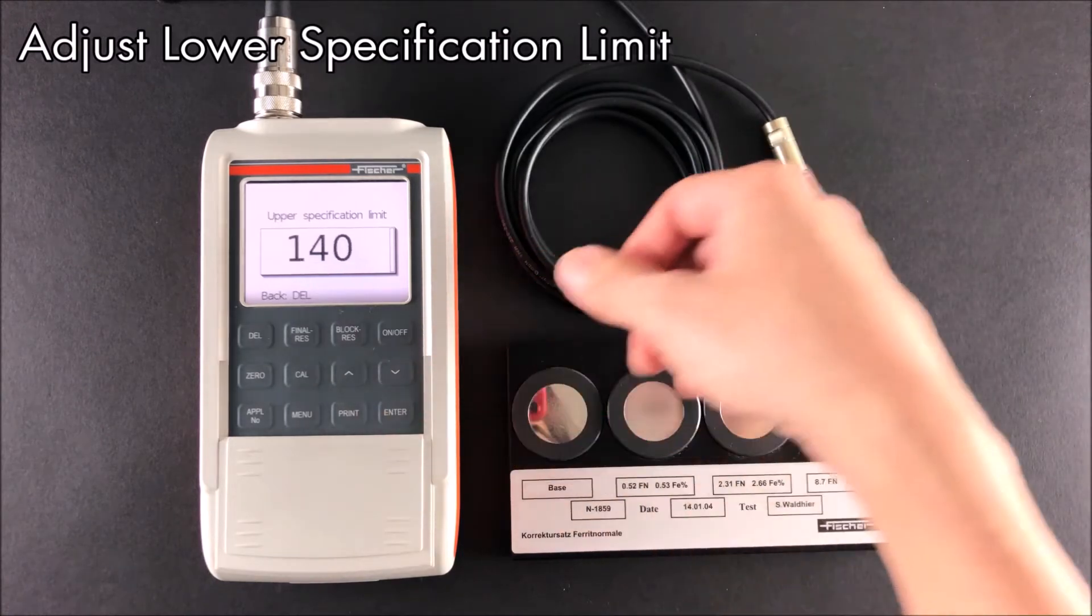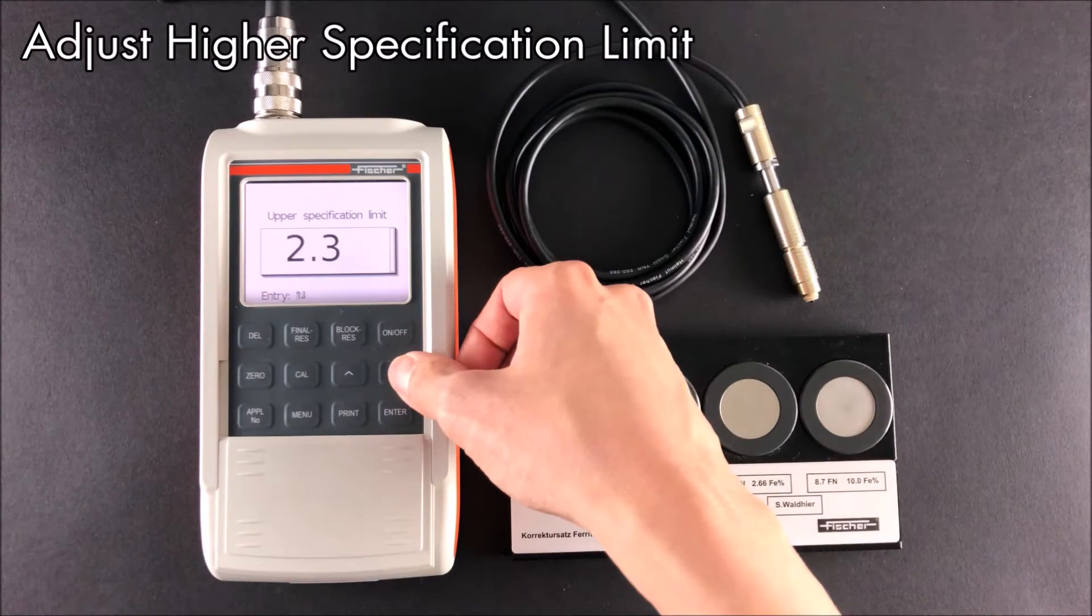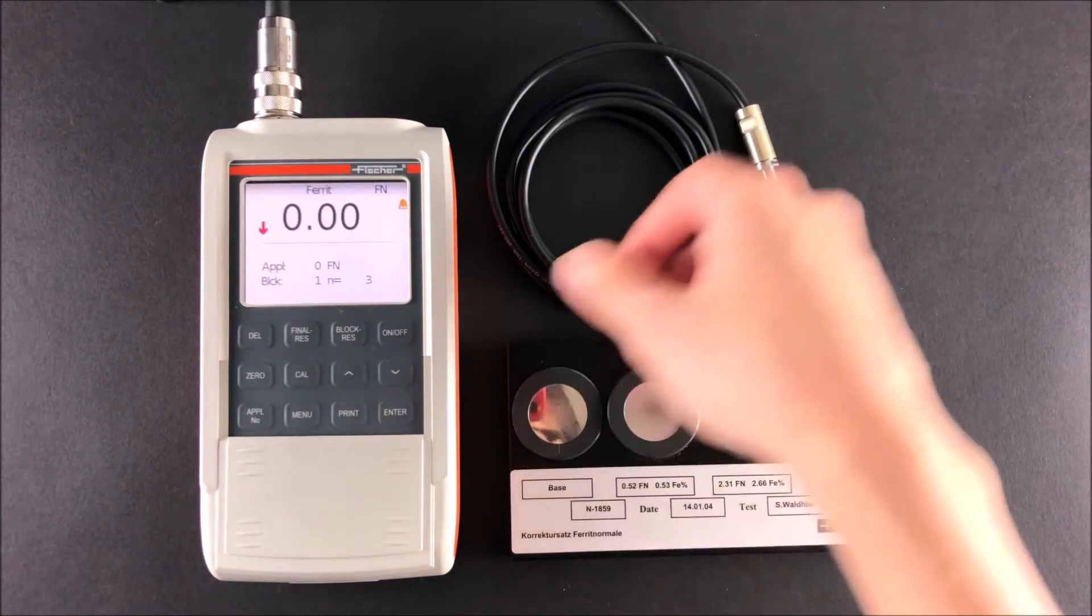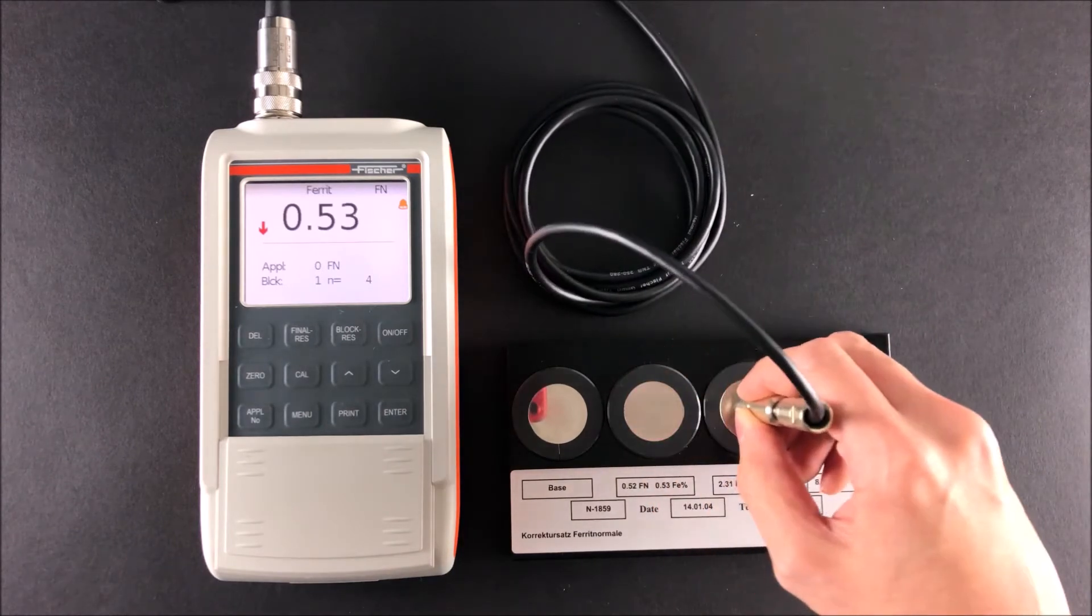When the value is within limits, there will be a single beep. When the value is not within limits, there will be a down or up arrow displayed, and multiple beeps will sound instead of a single beep.